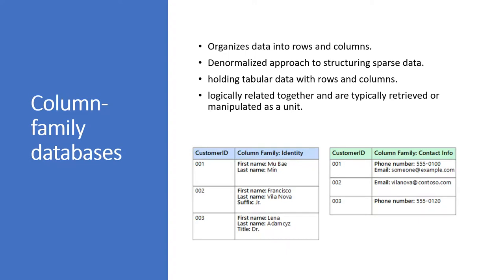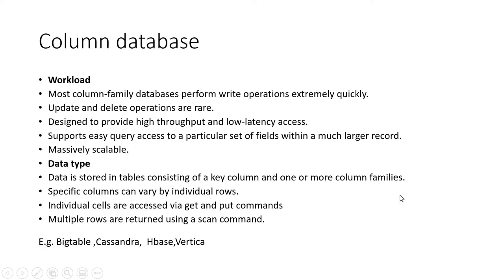Column-family databases organize data into rows and columns, but they are not RDBMS — it is a denormalized approach. For example, you have a customer ID column and a customer family column where you put related data like first name, last name, email, and address together. Column databases perform write operations very quickly; update and delete operations are very rare. They provide high throughput and low latency. Related data is stored together in one column, making reads very fast.